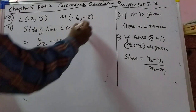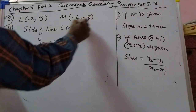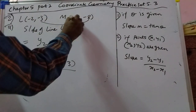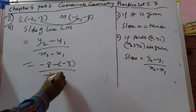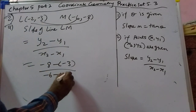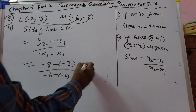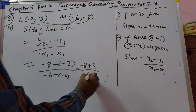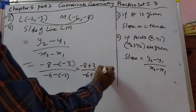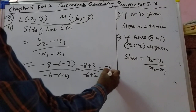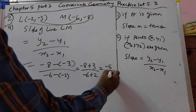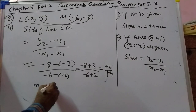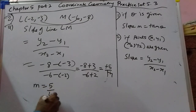In the fourth problem, same thing: minus 8 minus 1 minus 3, over minus 6 minus 2 minus 2. That will become minus 8 plus 3 over minus 8 plus 2, giving minus 5 upon minus 4. Therefore m is equal to 5 upon 4.